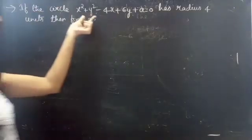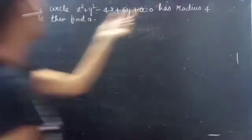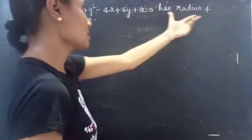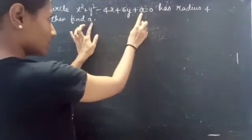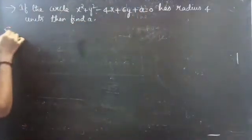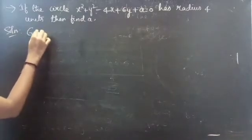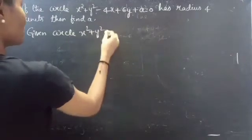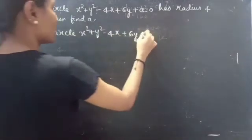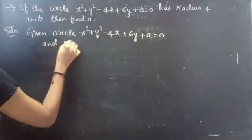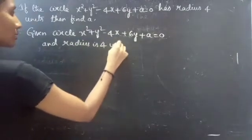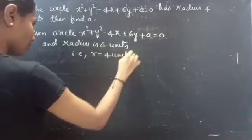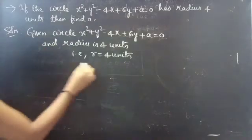Problem: if the circle x² + y² - 4x + 6y + a = 0 has radius 4 units, then find a. We are given a circle which has radius 4 units, and we have to find this unknown value a.